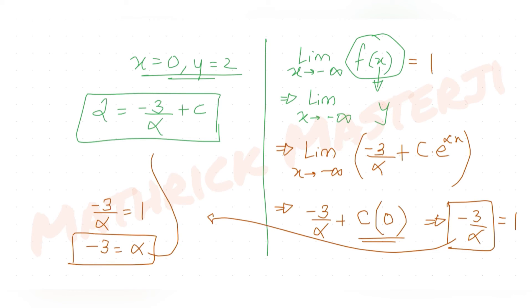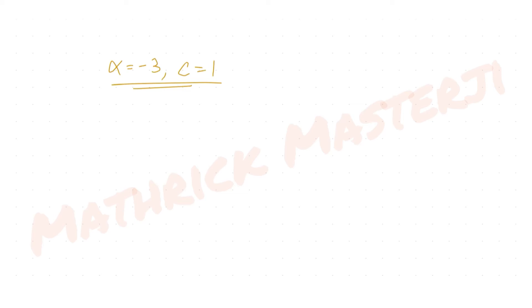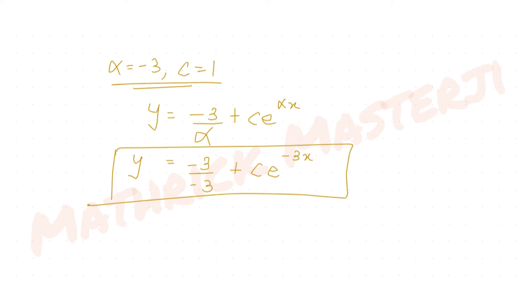With α = −3, substituting back into 2 = −3/α + C gives 2 = −3/(−3) + C = 1 + C, so C = 1. The solution of the differential equation is therefore y = −3/(−3) + 1 · e^(−3x) = 1 + e^(−3x).